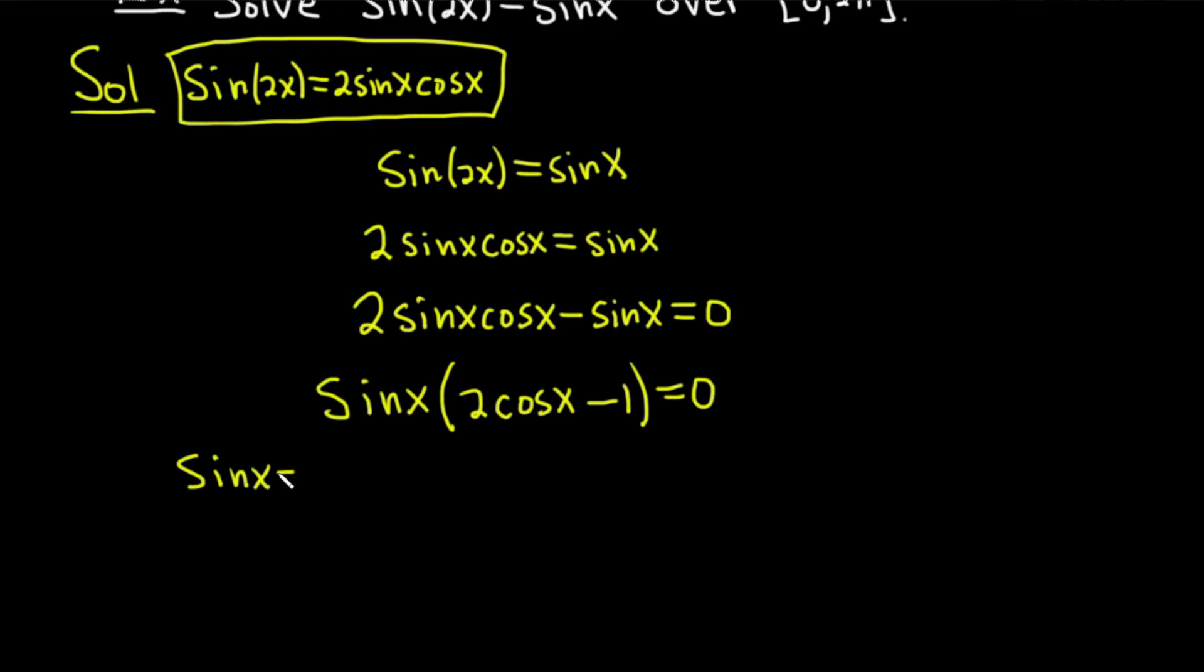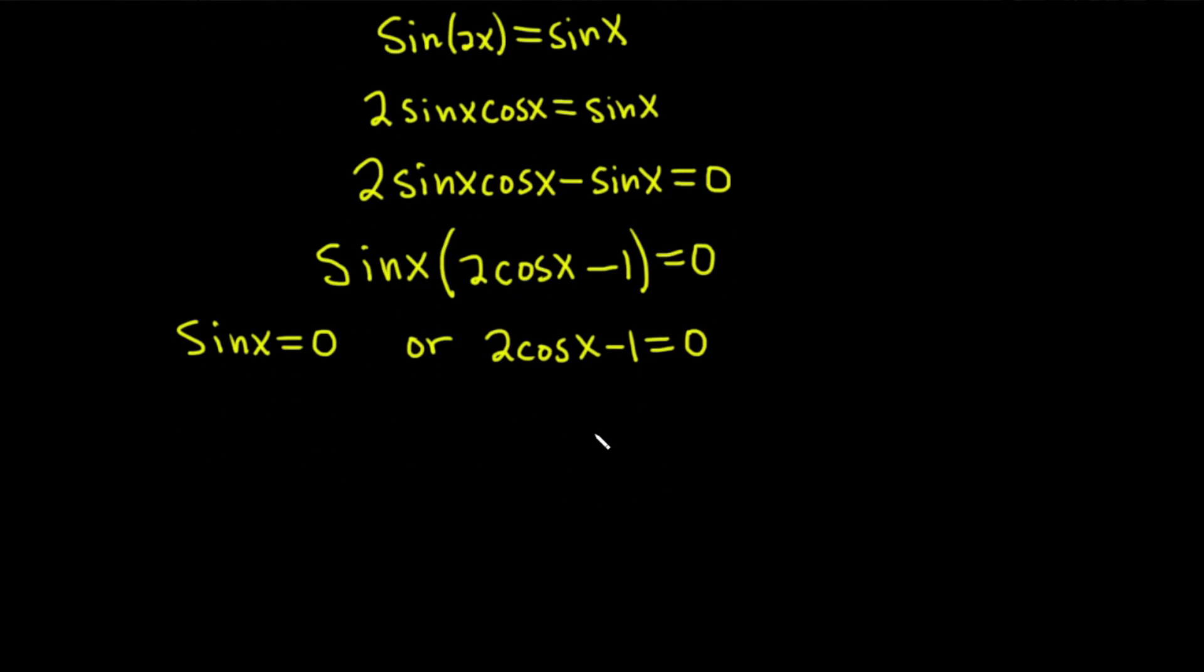Whenever you have a product equal to 0, you set each factor equal to 0. We have sine x equals 0 or 2 cosine x minus 1 equals 0. Here you can add 1 and divide by 2, and so we get cosine x equals 1 half.